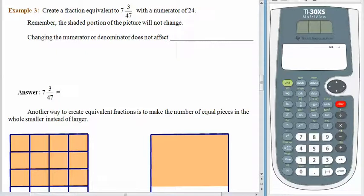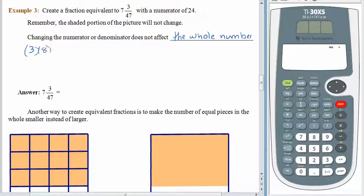This time we'd like to create a fraction equivalent to seven and three forty-sevenths, and we would like a numerator of twenty-four. Now the shaded portion of the picture is not going to change. When you look at this, you need to see seven wholes completely shaded and then a portion of the next picture shaded. So the whole number is not going to be affected when we rewrite this as an equivalent fraction. Changing the numerator or denominator does not affect the whole number.